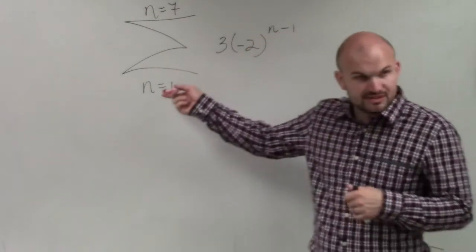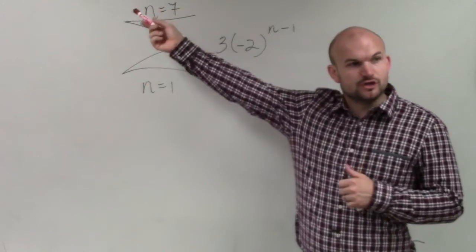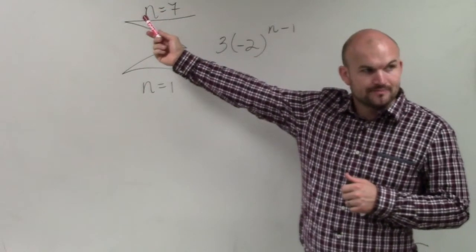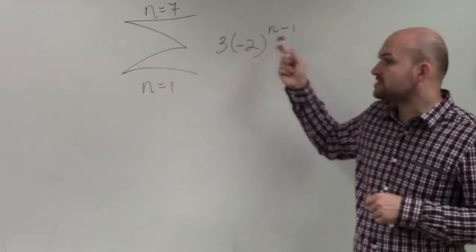First of all, this is where we start. This is the number of terms that are going to be part of the sum. And then this is your explicit formula.